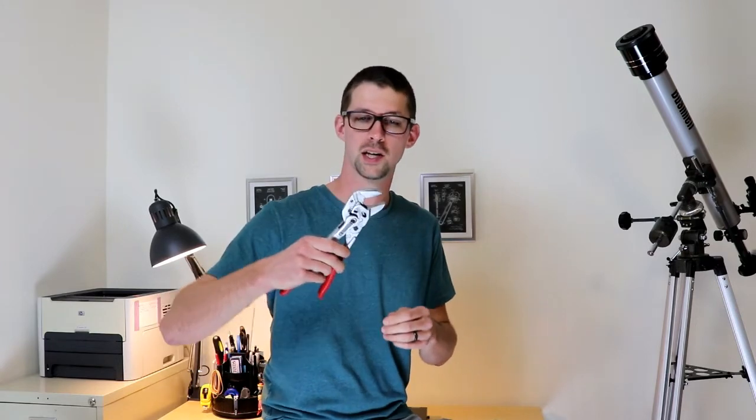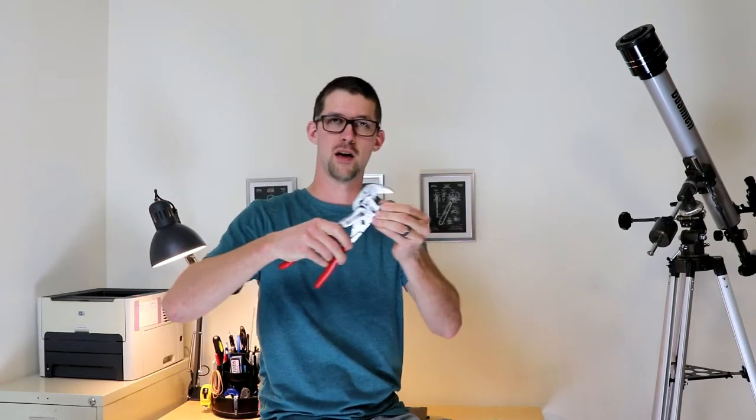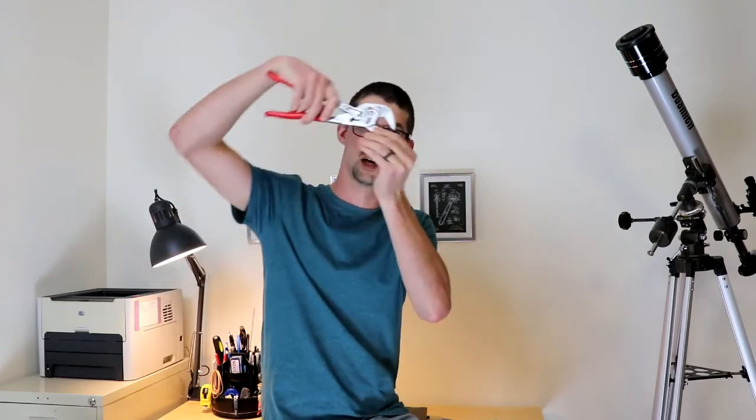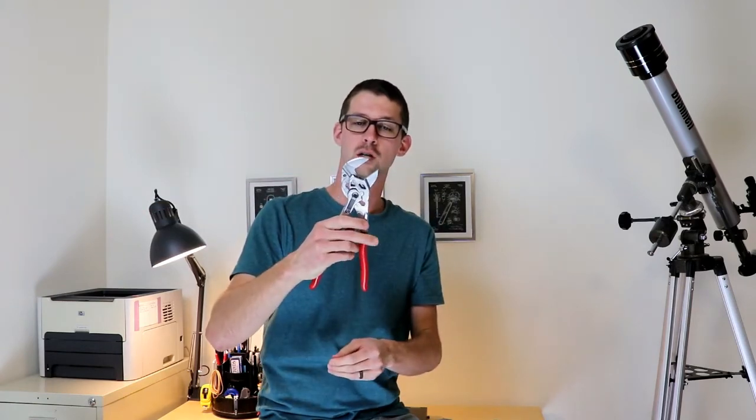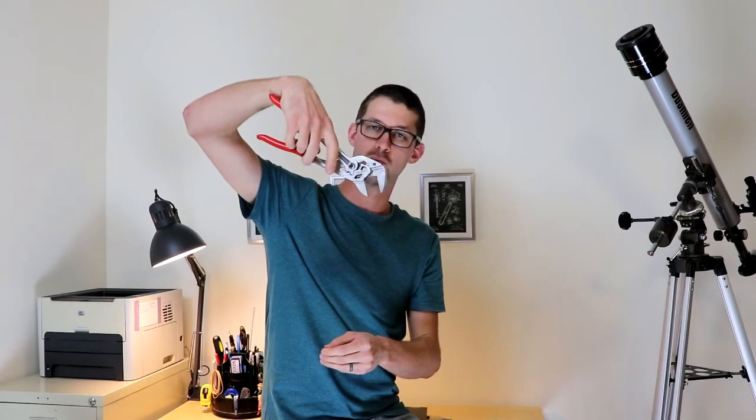Knipex advertises a ratcheting action, that is, you're gripping on the fitting and when you go to remove the wrench to get another bite, instead of having to remove the wrench entirely and shift it around like you would with a crescent wrench, you can simply kind of let the handles fall free, pivot around and re-grip for another bite. In many cases, it works exactly as advertised.